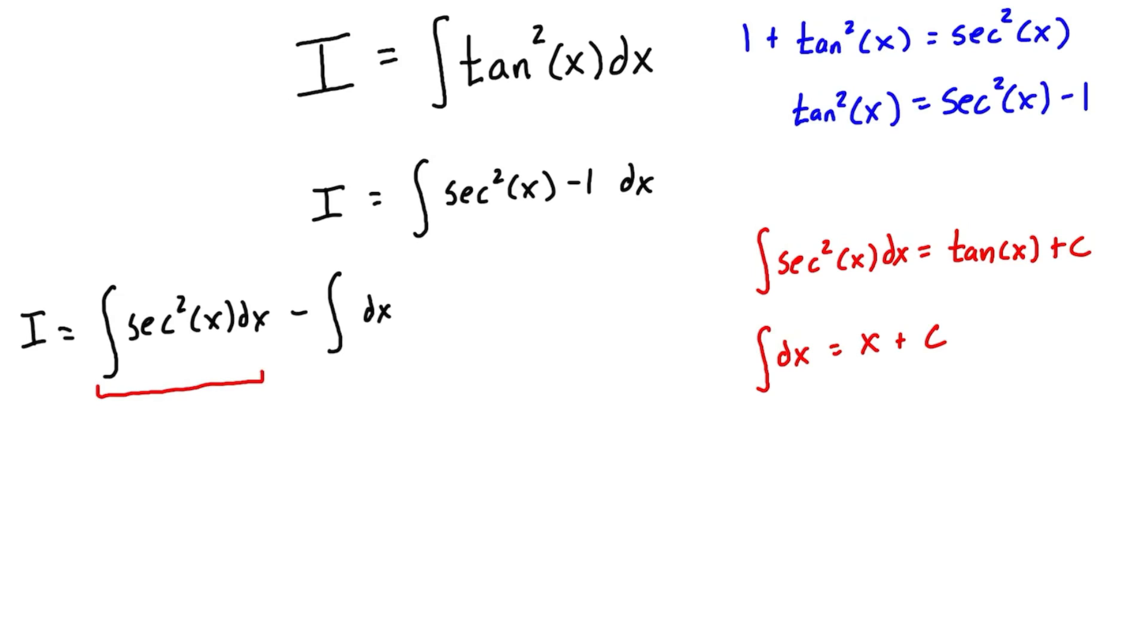Okay, so we have the integral of sec²(x)dx right here, so we can replace that with exactly what it is. So I is going to be equal to first of all tan(x) + C, and then we're going to subtract the integral of dx, which is right here, which is going to be minus (x + C). We can get rid of these brackets if we want, and this is just going to become -C.